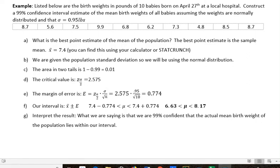Hi, it's Carly McEvoy. I just want to show you an example of constructing a confidence interval using the sample mean given the population standard deviation. Listed below are the birth weights in pounds of 10 babies born on April 27th at a local hospital. Construct a 99% confidence interval estimate of the mean birth weights of all babies, assuming the weights are normally distributed and that sigma is 0.95 pounds.